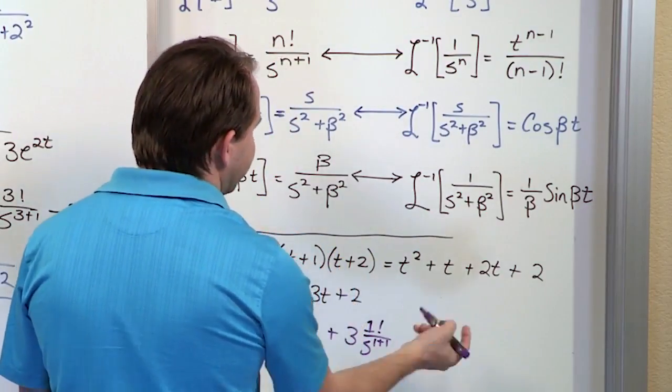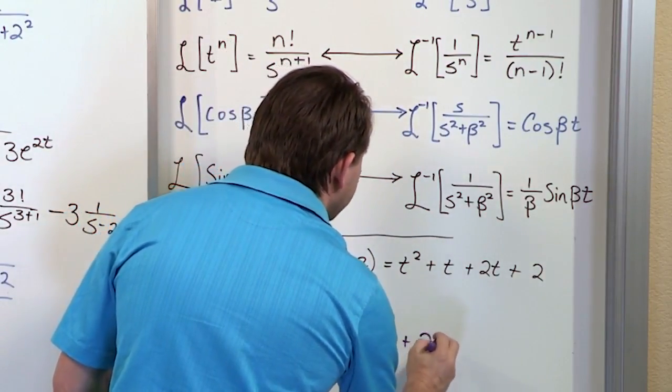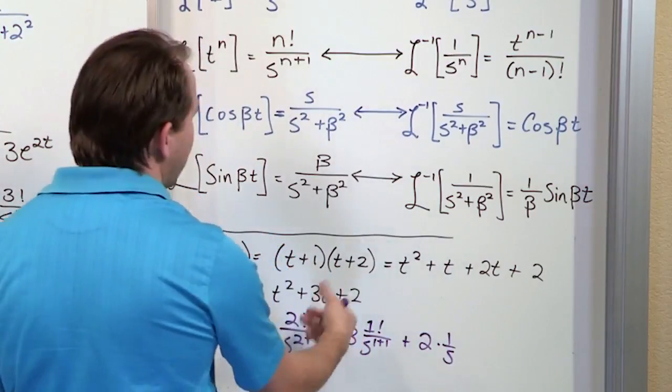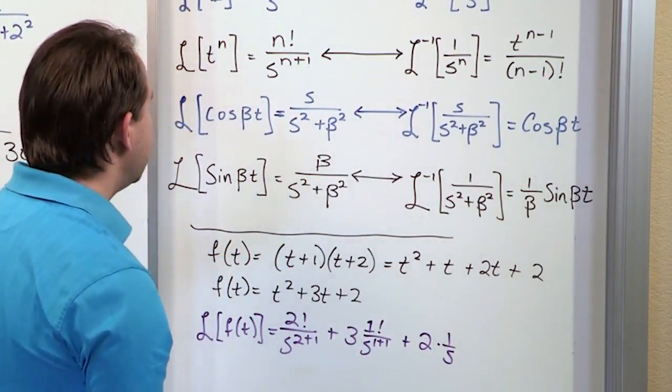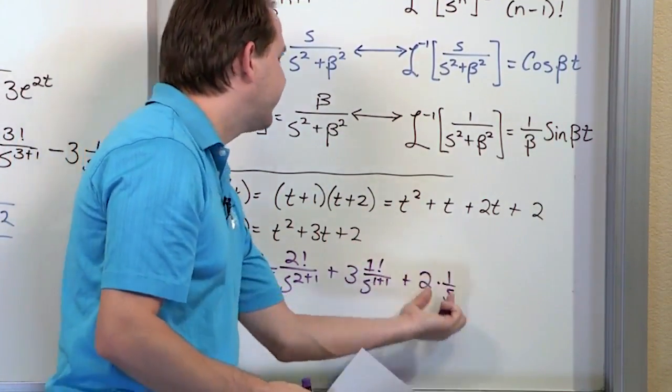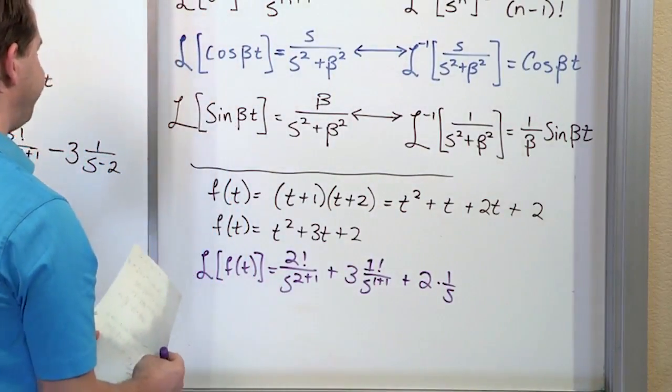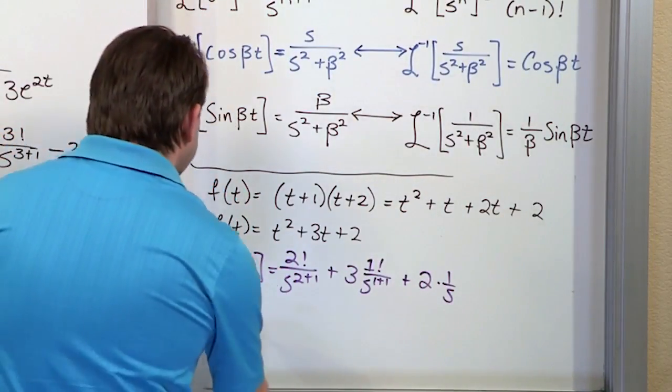And then the last thing is the Laplace transform of 2. But we've done this enough where we know it's 2 times 1 over s, or 2 over s, because taking the Laplace transform of a constant is just going to put the s down below it.